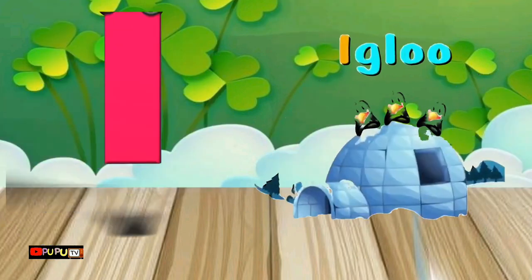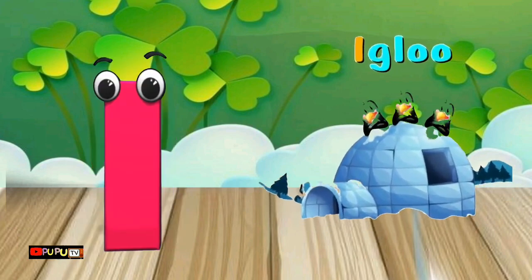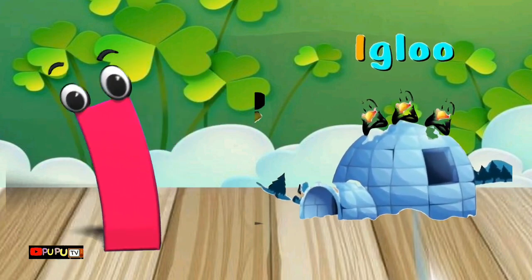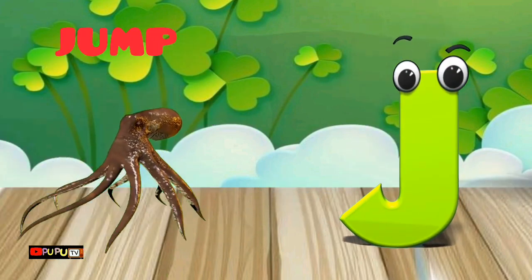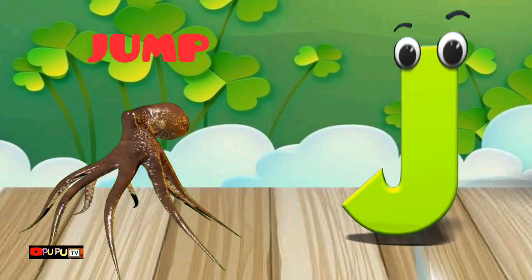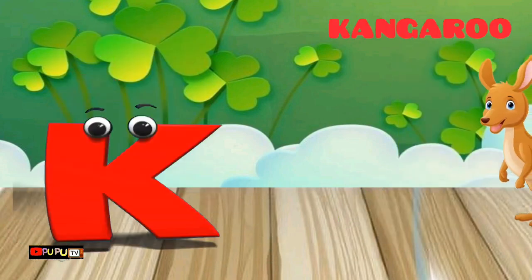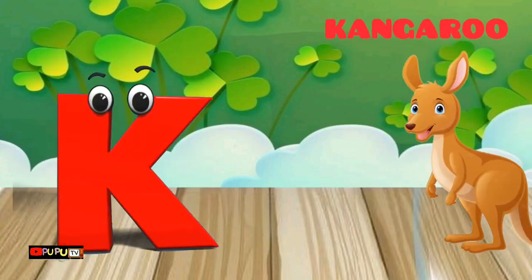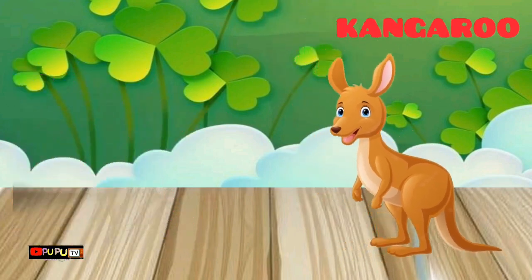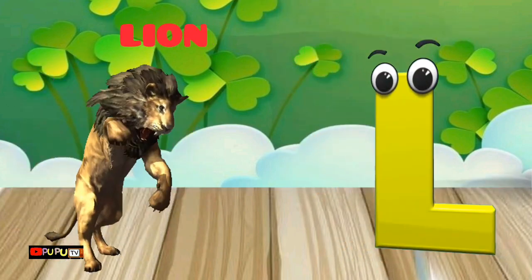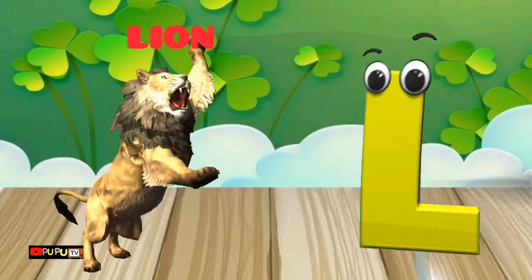I is for Igloo. I-I-Igloo. J is for Jump. J-J-Jump. K is for Kangaroo. K-K-Kangaroo. L is for Lion. L-L-Lion.